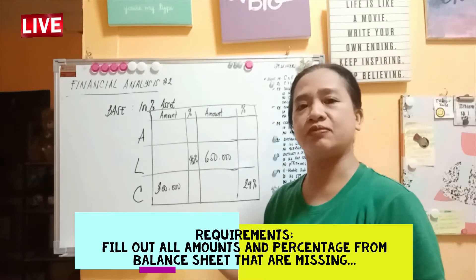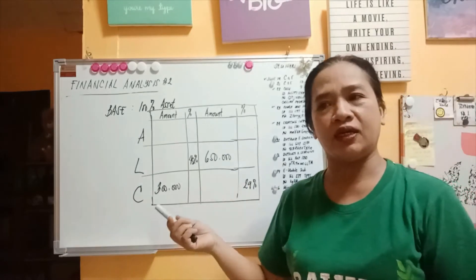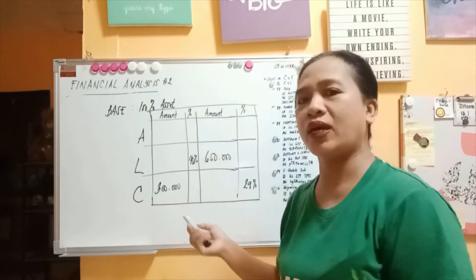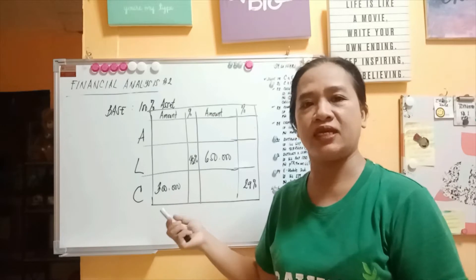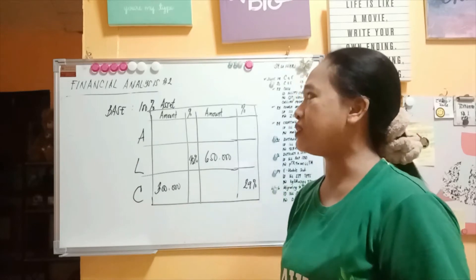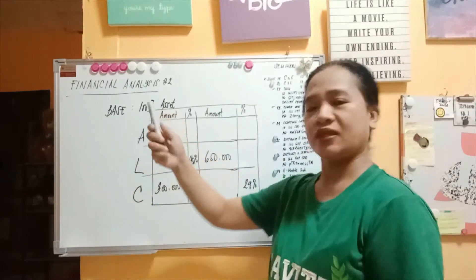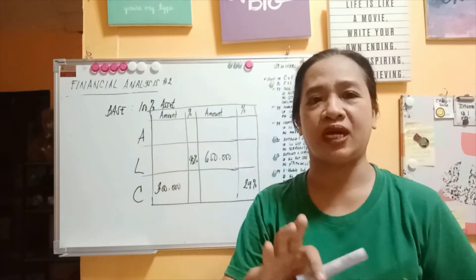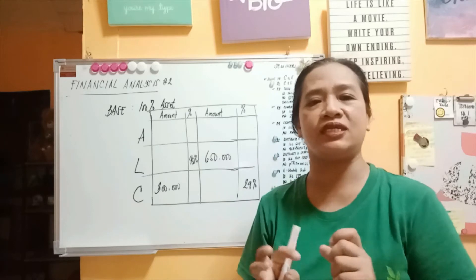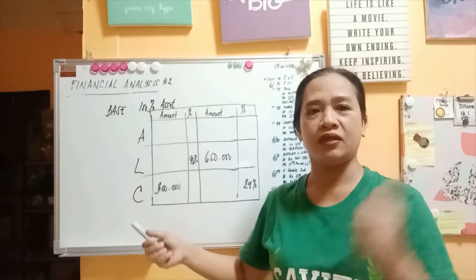This is financial analysis number two — a balance sheet account. Suppose you don't know the exact amount of assets, liabilities, and capital, and your boss wants you to analyze the account. Under the balance sheet, remember that the base is always the asset, meaning it is always 100%. Even without exact amounts, you can analyze and find the figures.